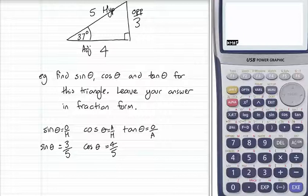Tan of the angle is opposite over adjacent. The opposite is 3, the adjacent is 4, so we write that as a fraction: tan of the angle is 3 over 4.